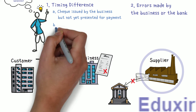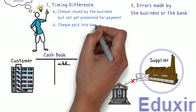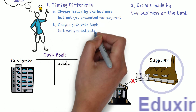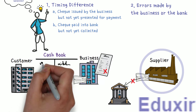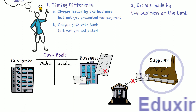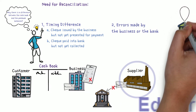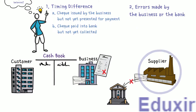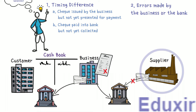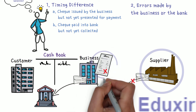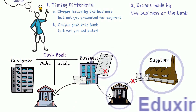The next reason is checks paid into the bank but not yet collected. When the business receives checks from its customers or debtors, they are immediately recorded on the debit side of the cashbook, so the cashbook shows more amount to be available with the bank. These checks could be from a bank not in the same city or town, or from a different branch. In such cases, the bank may not have collected this check amount by the time the bank statement is received by the firm, resulting in a difference between the cashbook balance and the bank passbook balances.